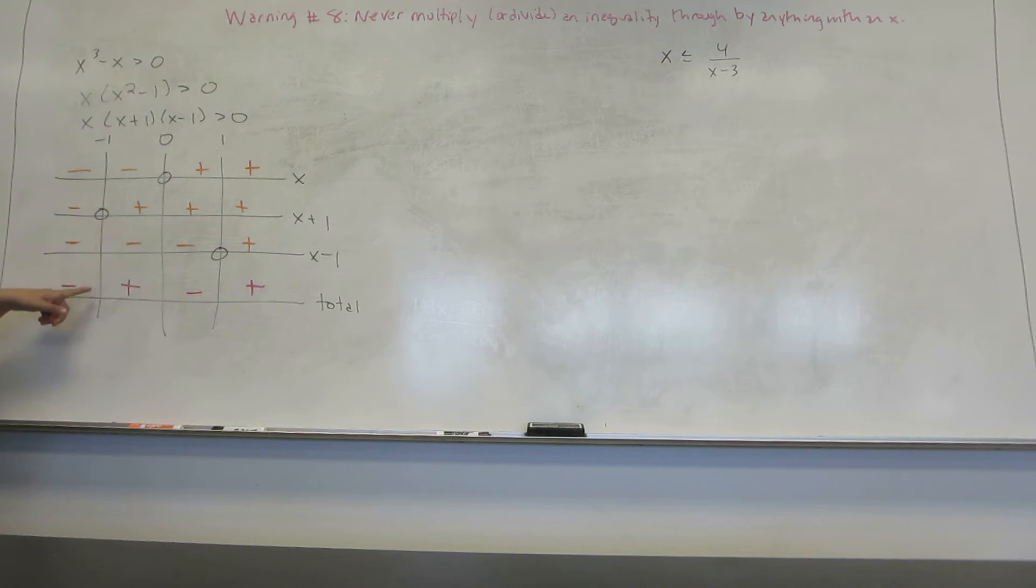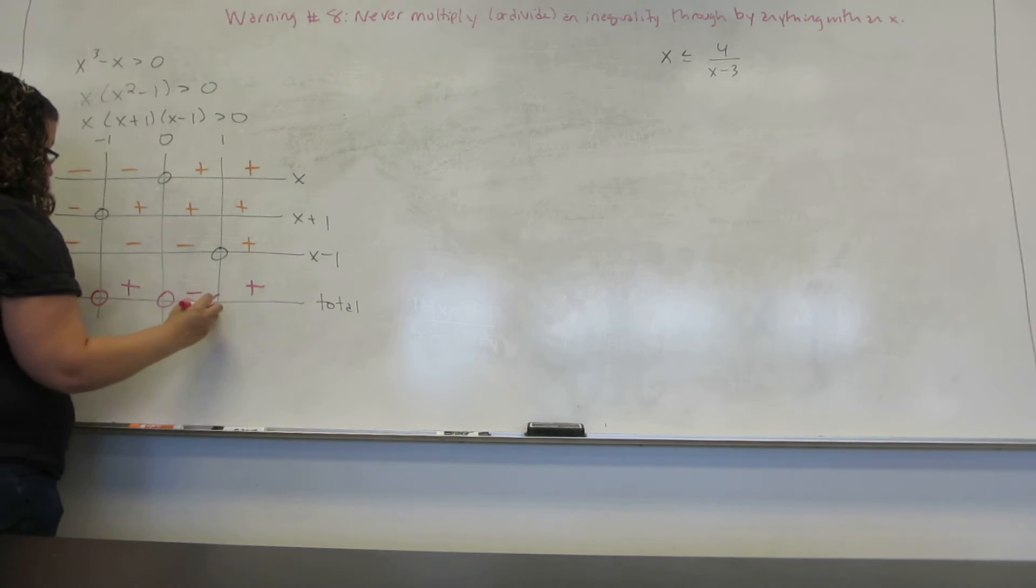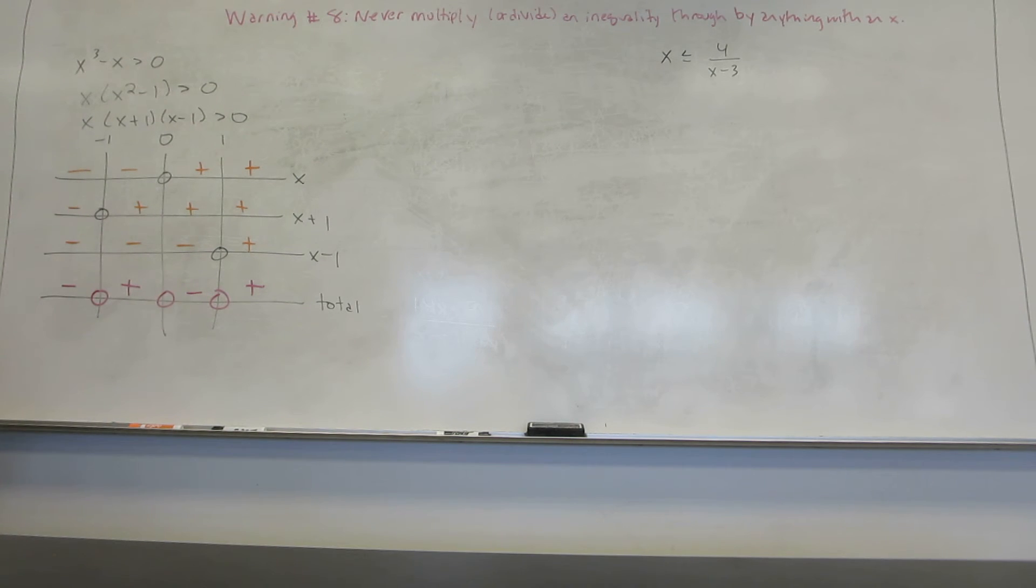Now we also want to do something at the vertical lines. In this case, all three things are multiplied. When I multiply zero times anything else, I get zero. So as long as one of the terms is zero, the whole thing will be zero.